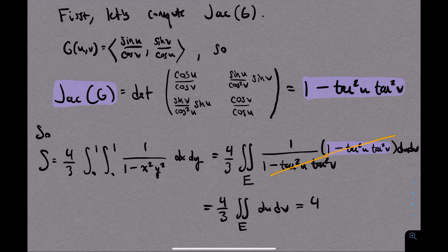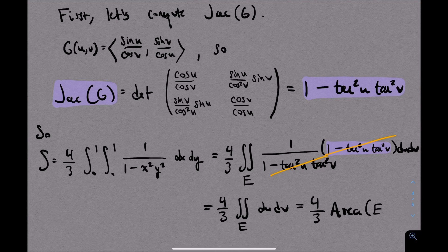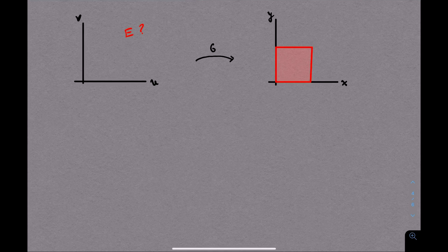How nice is that? Now remember that when you compute the double integral of 1 over some region, what does that give you? It gives you the area of the region. So that tells us that the number that we're after is 4 thirds times the area of whatever this region e is.